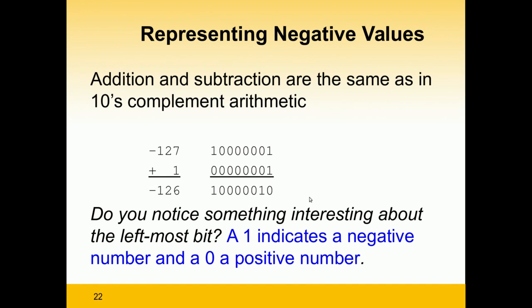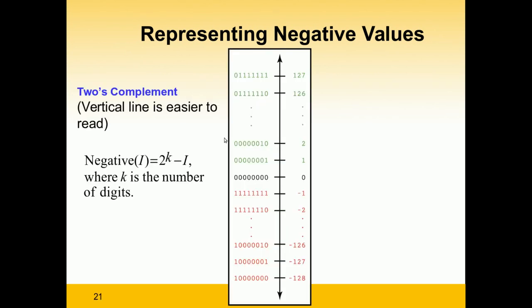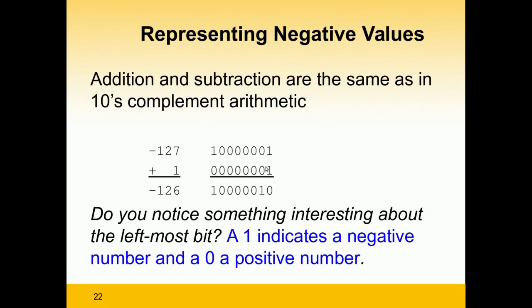How is addition and subtraction the same as in tens complement arithmetic? For example, adding minus 127 plus 1: minus 127 in the new binary schema is 1,0000001. Adding 1 to that — 1 plus 1 equals 0 with a carry of 1 — gives the result, which is equivalent to minus 126. As you can notice, the leftmost bit being 1 indicates a negative number, and 0 indicates a positive number.